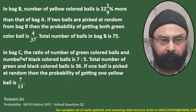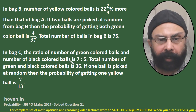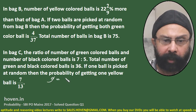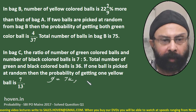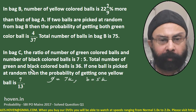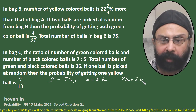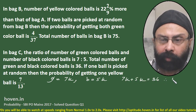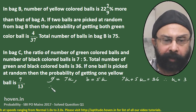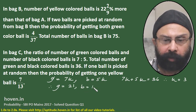In bag C, the ratio of green colored balls to black colored balls is 7:5. So green = 7k and black = 5k. The total number of green and black colored balls is 36, so 7k + 5k = 36, giving 12k = 36, so k = 3. Therefore green = 21 and black = 5 × 3 = 15.